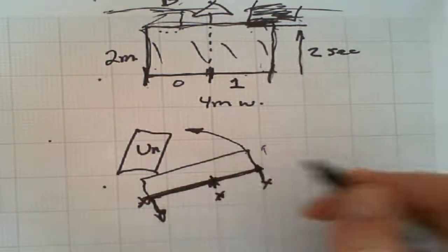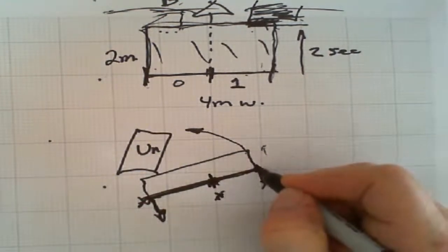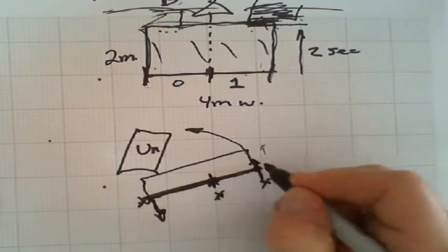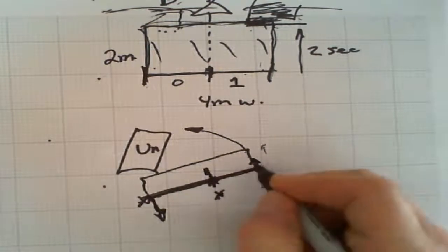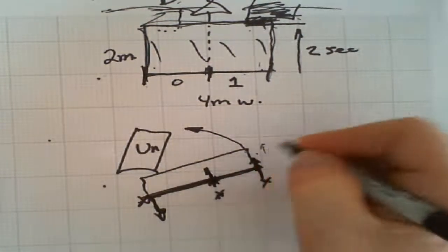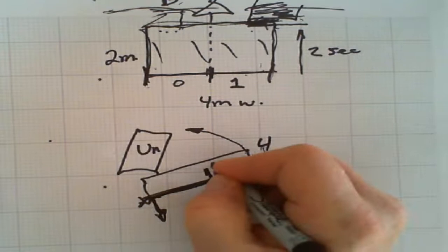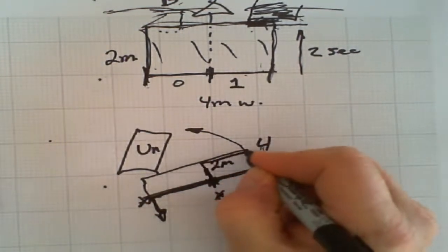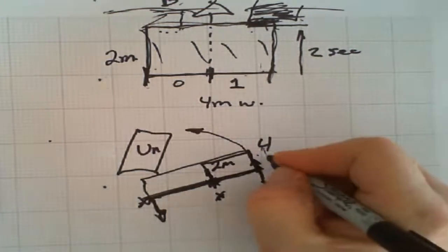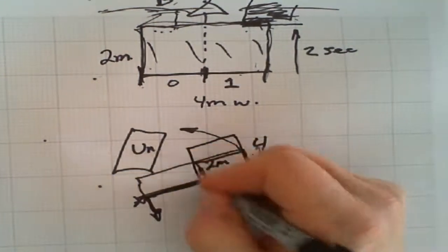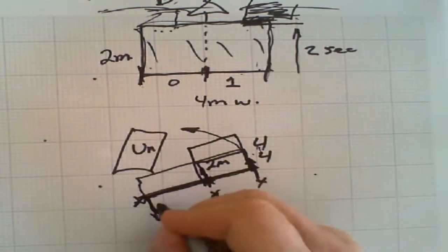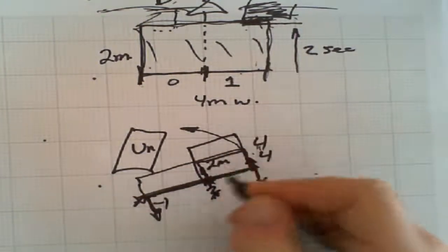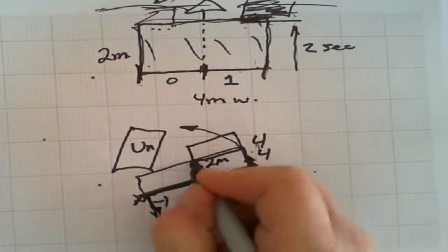Now if we only had one section and were turning really sharp, the center might be standing still or going backwards. You can't just average the two speeds, because if this side is going two meters per second forward and the other is going two meters per second backwards, your effective speed is zero and your look-ahead is zero — which doesn't work. So for each section you determine the maximum speed and use that value. The outside of the boom goes faster, so if one side is going four meters per second and the other two, the effective look-ahead for that section uses four meters.